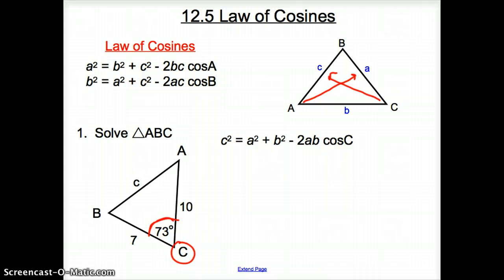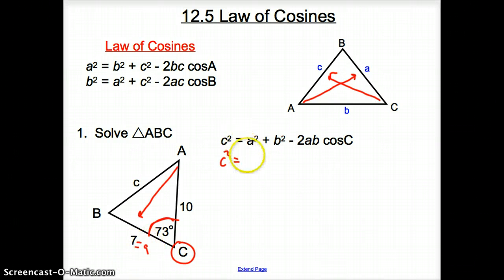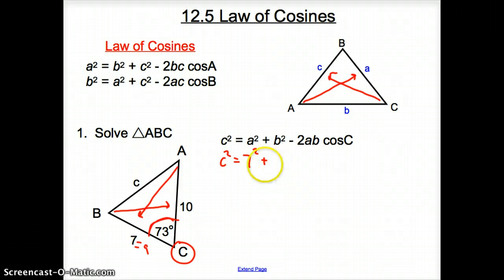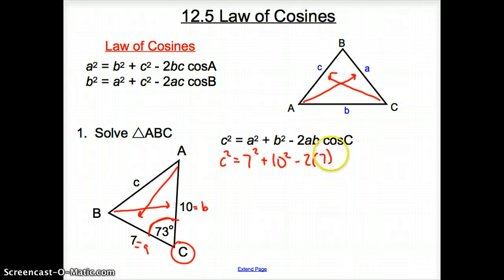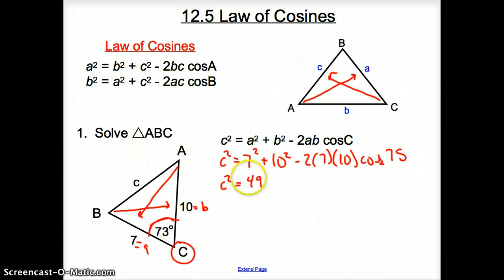Now we can plug things into this formula. It's going to be C squared equals — my A is going to be 7, so it's 7 squared plus, and my B is 10, so 10 squared, minus 2 times A (which is 7) times B (which is 10) times cosine of 73. Now I'm going to punch this into my calculator. So I have C squared equals 49 plus 100 minus — when you punch this all in — you get 40.93.